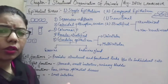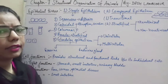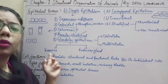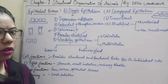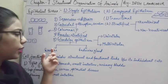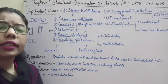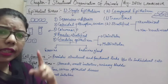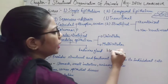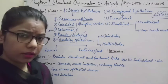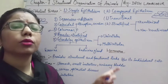On the basis of their secretion method, glands are divided into exocrine and endocrine. Exocrine glands secrete their products through ducts. Endocrine glands do not need ducts; their products are called hormones, and these hormones are released directly into the bloodstream.